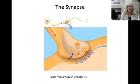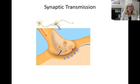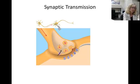Here's a close-up of the terminal of one nerve cell synapsing onto the dendrite of another. Use chapter 48 in your textbook to label all the appropriate structures. Now here are the steps of synaptic transmission: first, the presynaptic neuron synthesizes a chemical neurotransmitter and stores it in vesicles in the terminal of the first neuron.